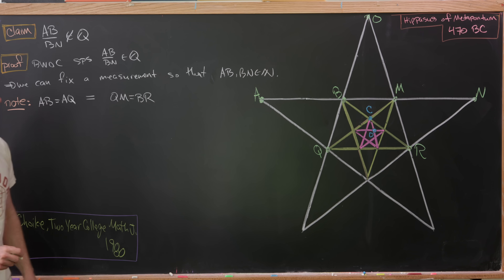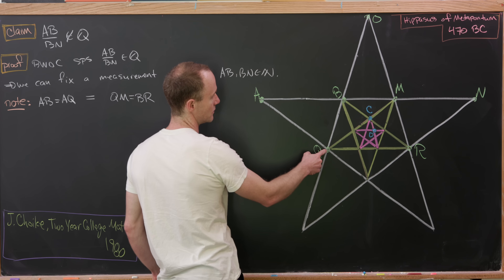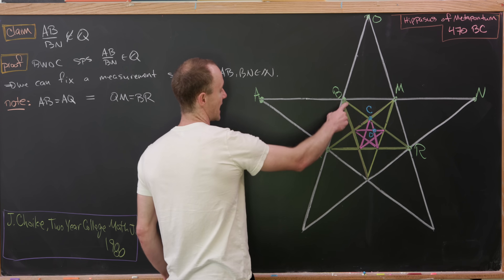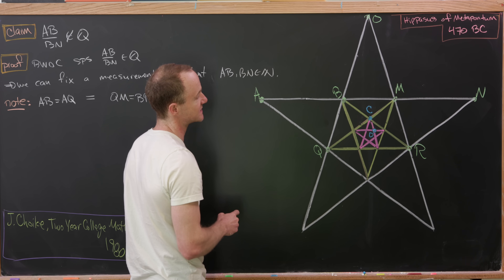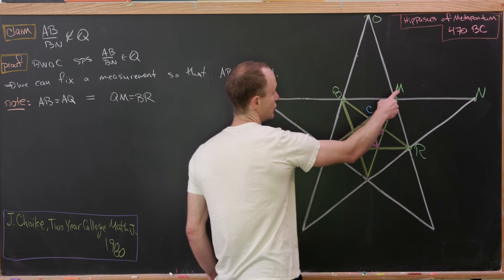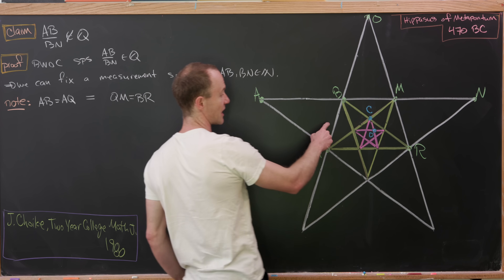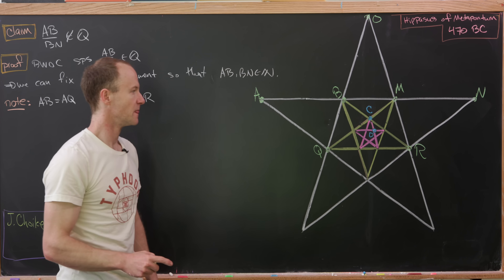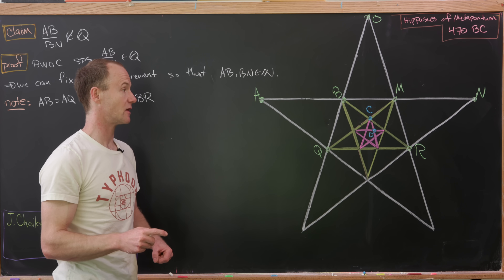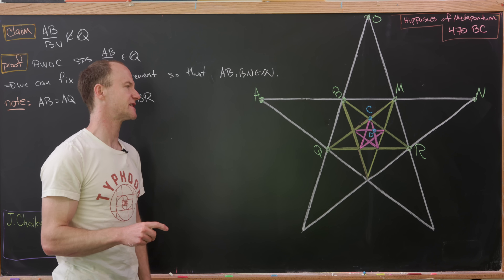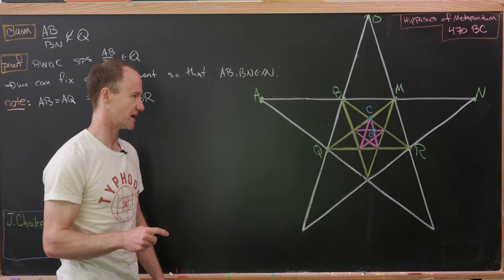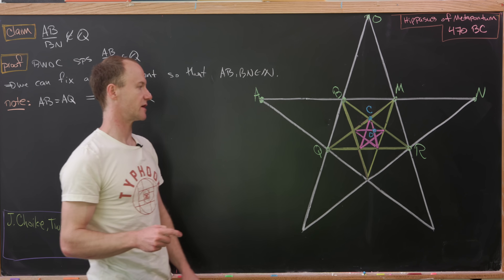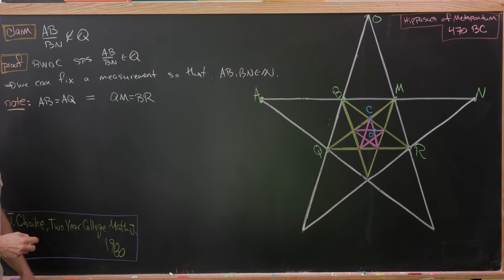AQ equals QM follows because triangle ABQ is similar to triangle QMR. They don't share a side, but they share the side length QB and MR. You can also prove all angles are equal by angle chasing — I'll leave that as a homework exercise. Putting that together, those two are congruent triangles, making this last equality true.